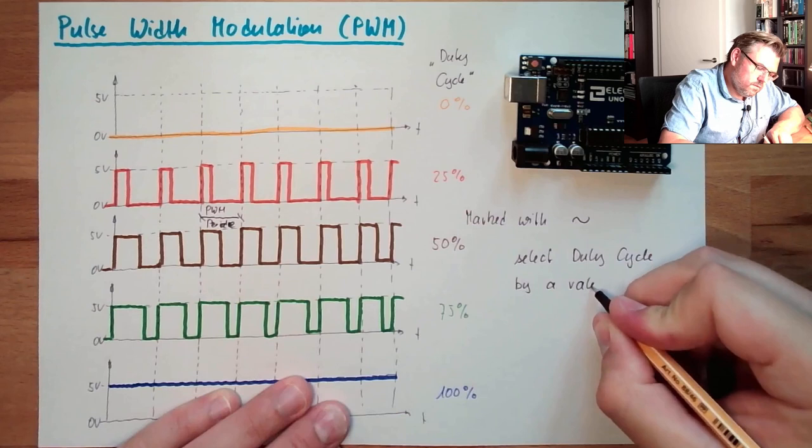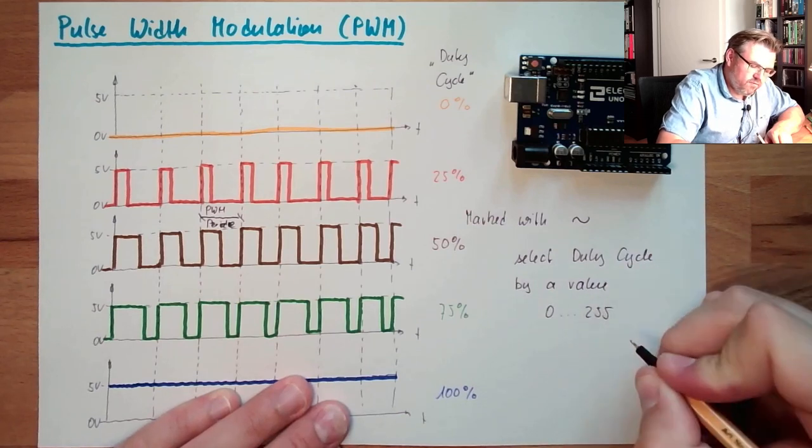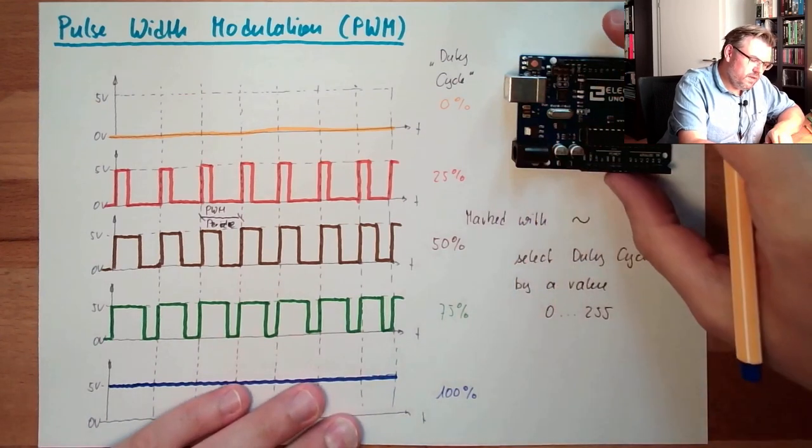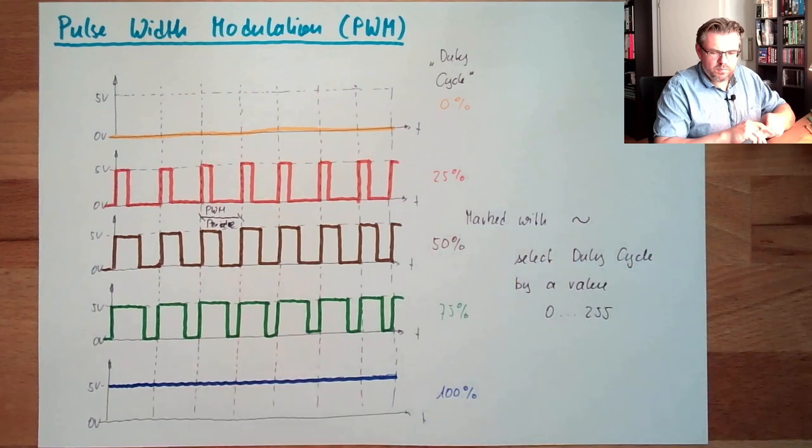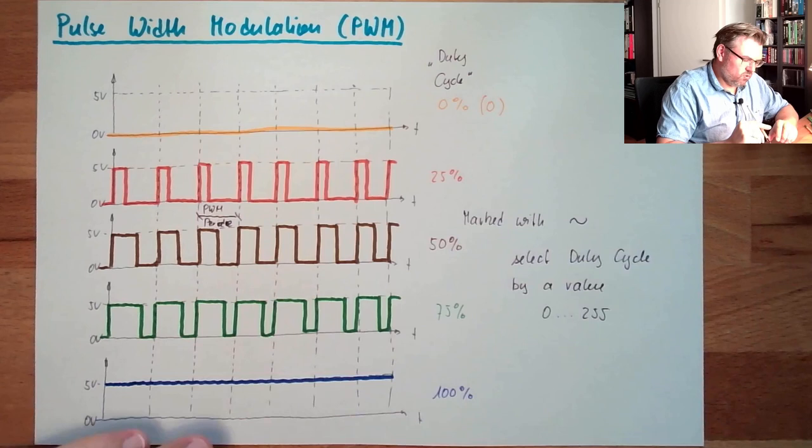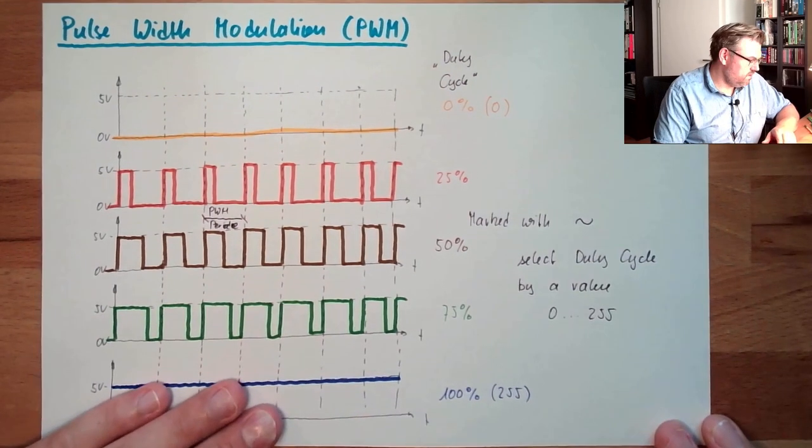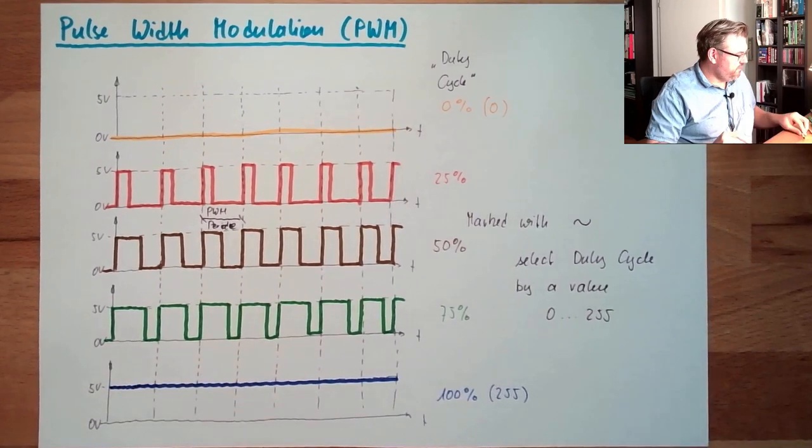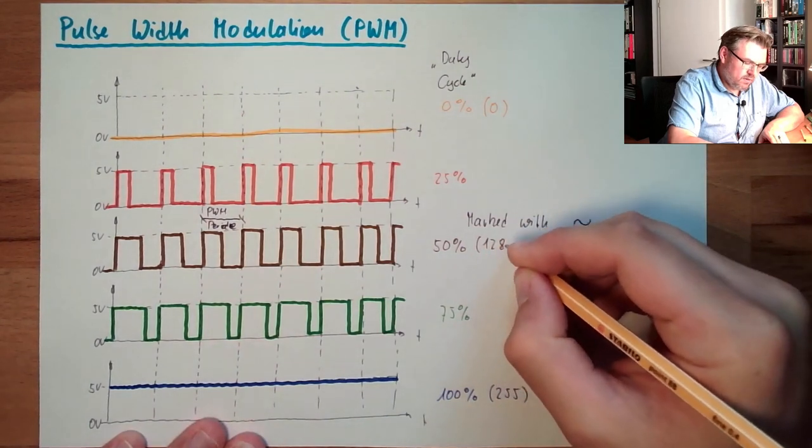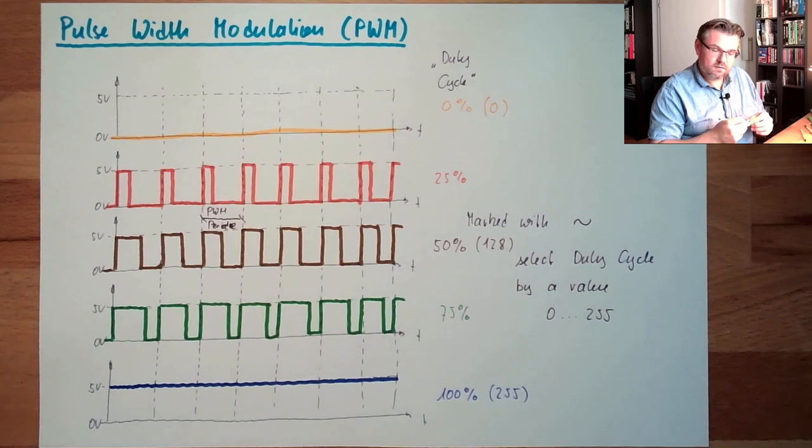We can, without saying percentage, we are selecting, select duty cycle by a value between 0 and 255. So this here would be 0 on our Arduino. And this, always on, would be 255. And 50% then is, of course, around 128. And anything in between, you can select.